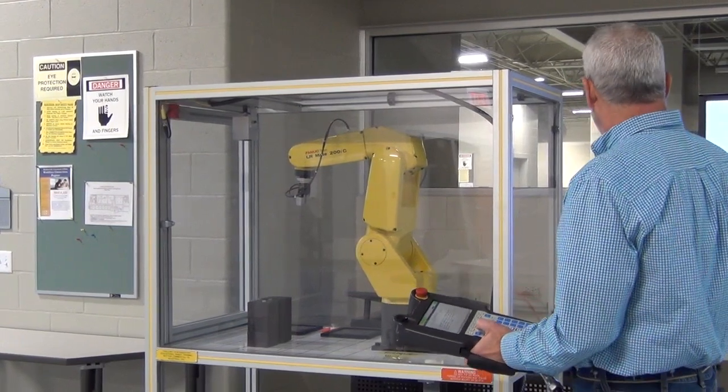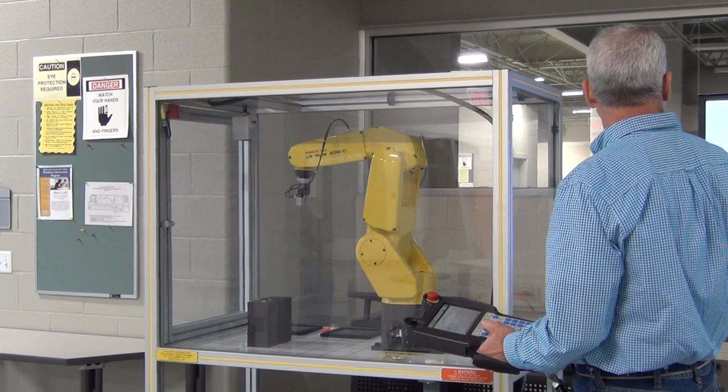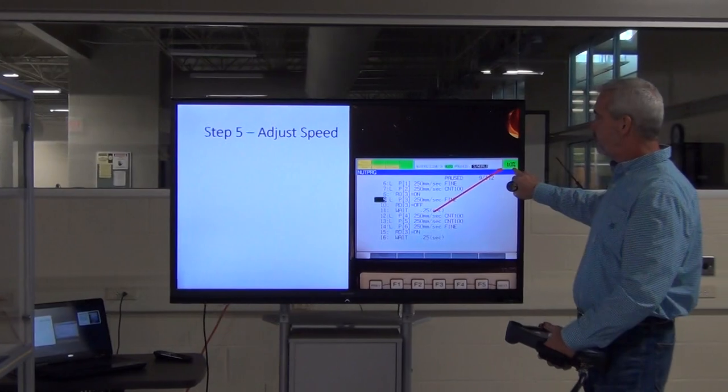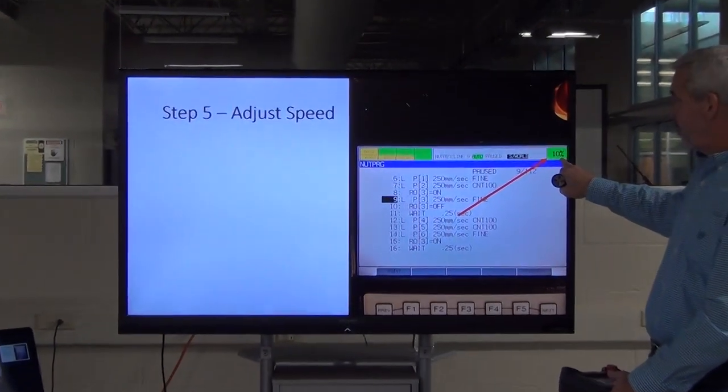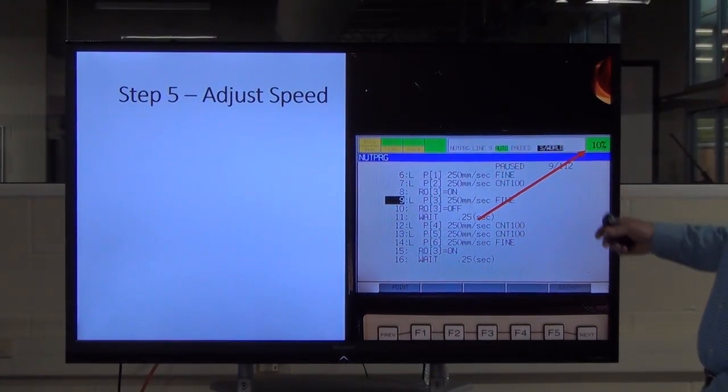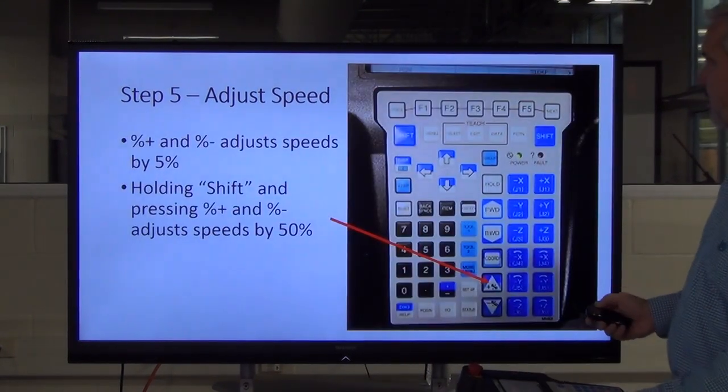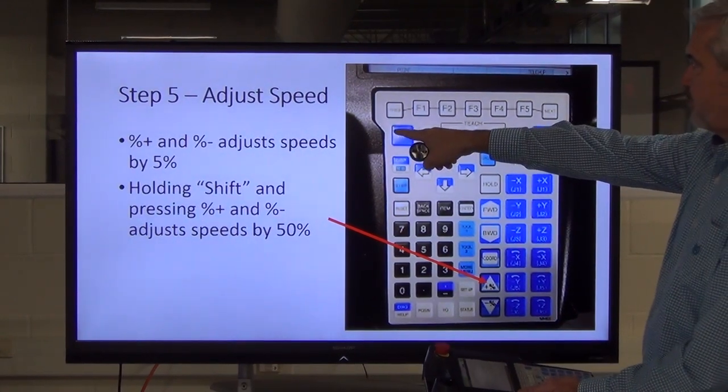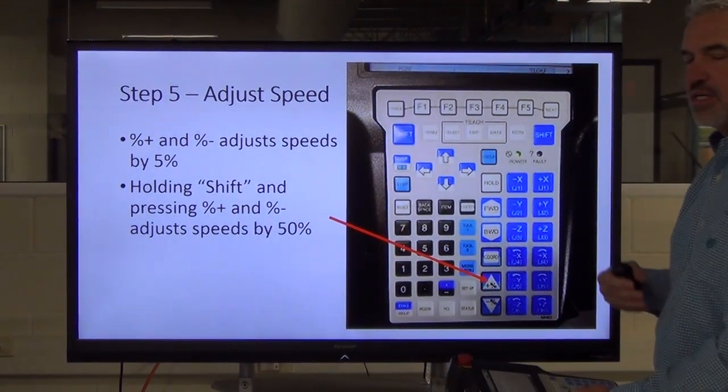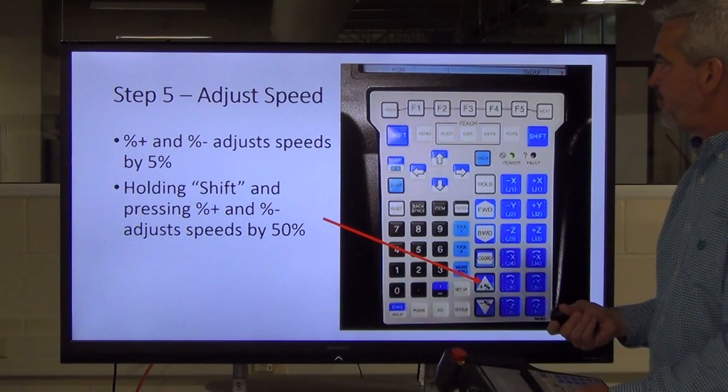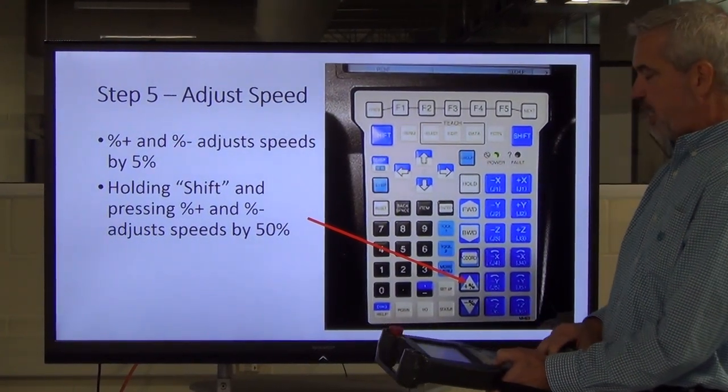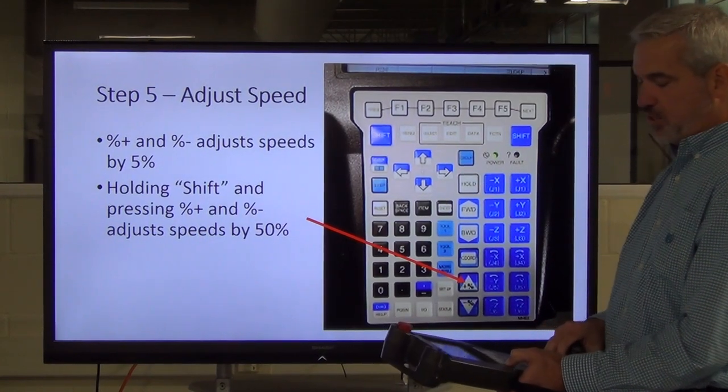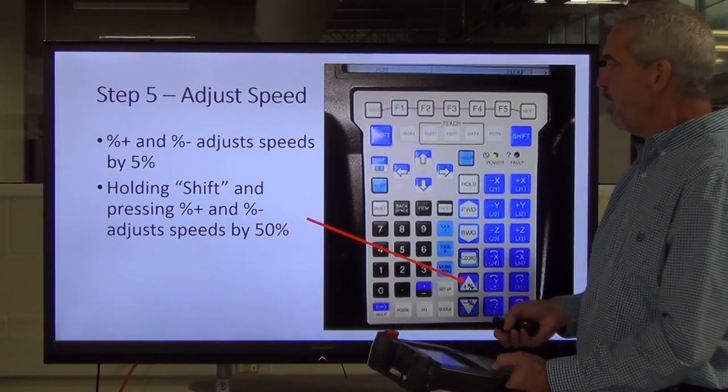One other thing that you can do is control the speed as well. The speed is up here in the left hand corner. It tells you what percentage of the full speed it's running at at the time. So, right here it's set at 10%. But you can change that by simply pressing the plus, percentage plus, percentage minus. That allows you to change the speed. And again, holding the shift key will allow you to change it by up to 50%. So, if I hold the shift key, it goes from 100 to 50% down to zero. If I just hit the speed key with no shift, it's going to do it in 5% increments.